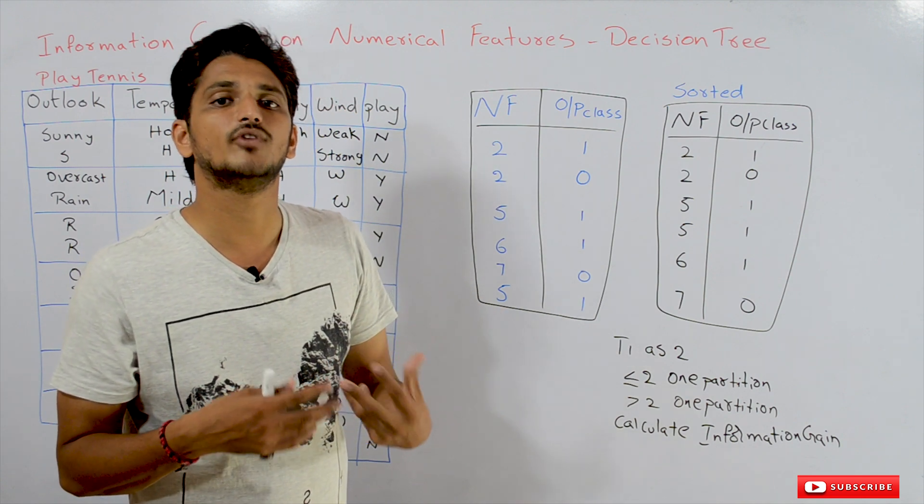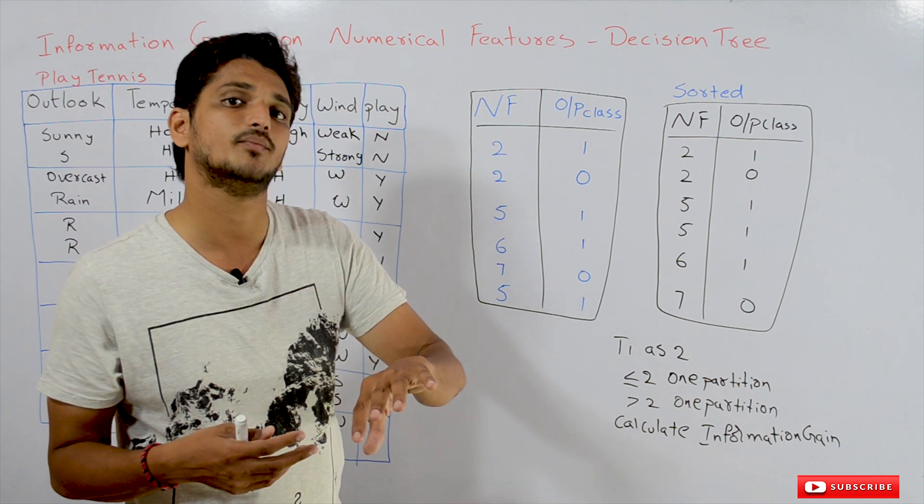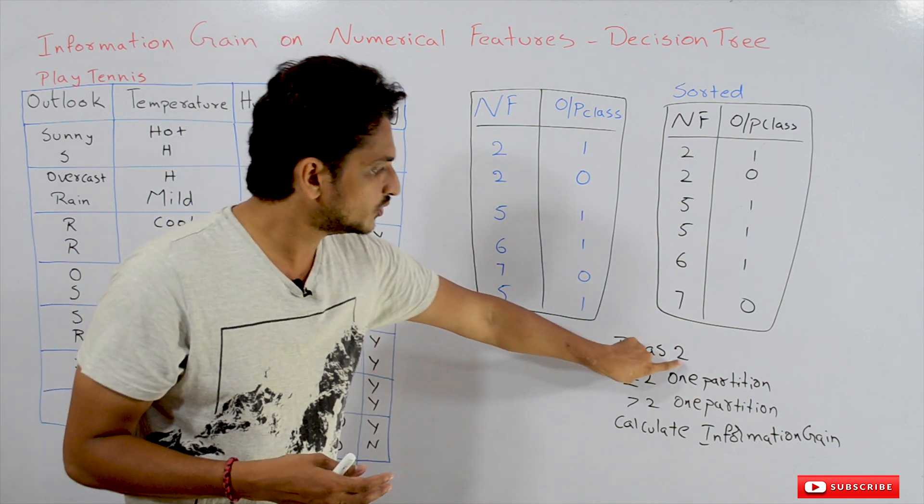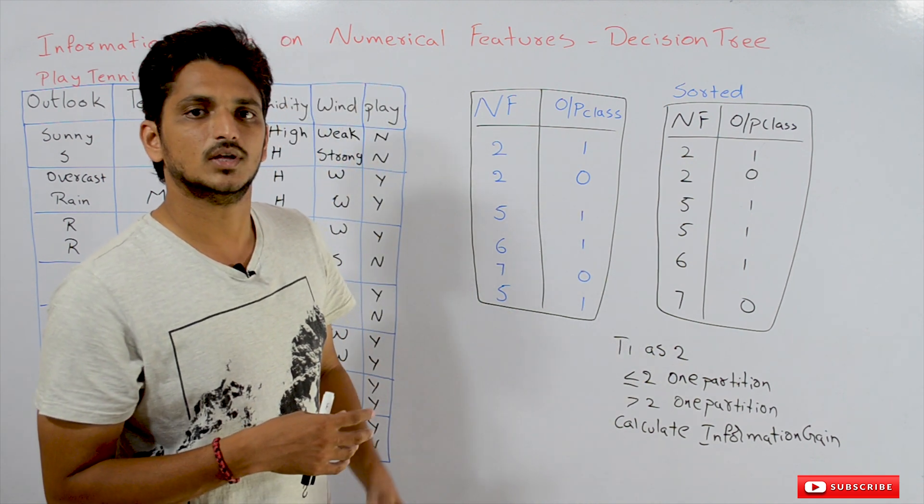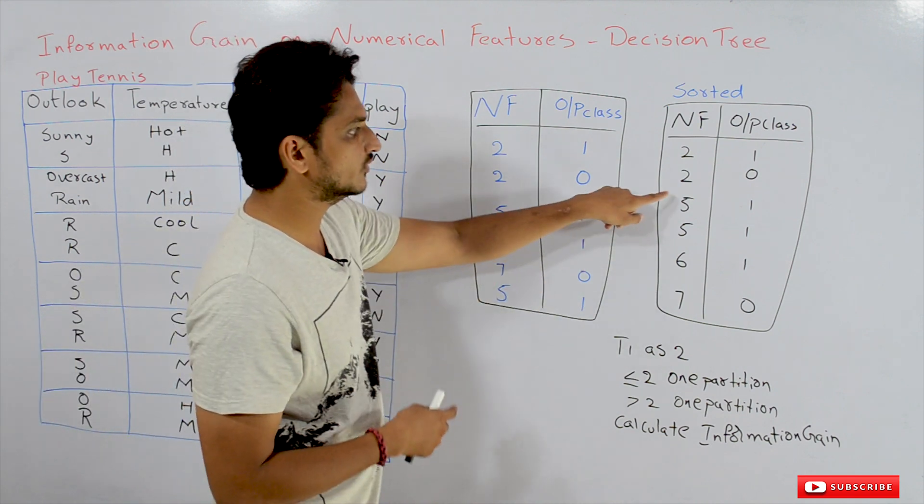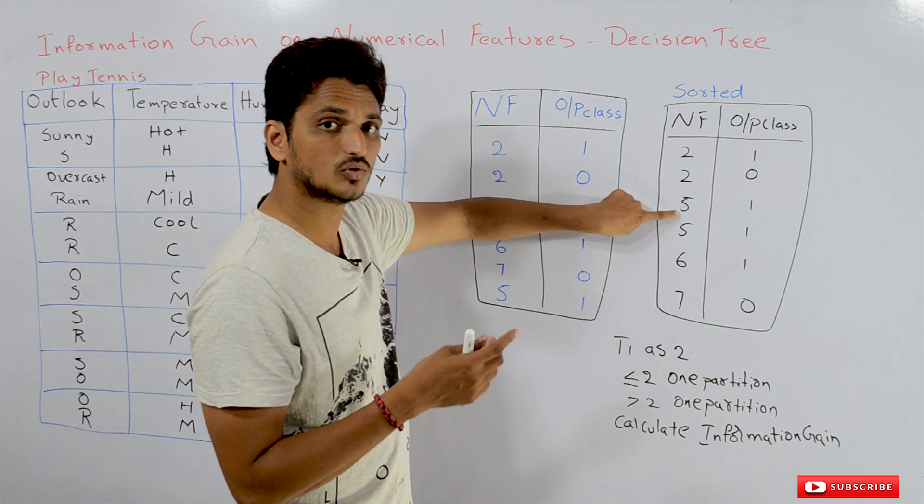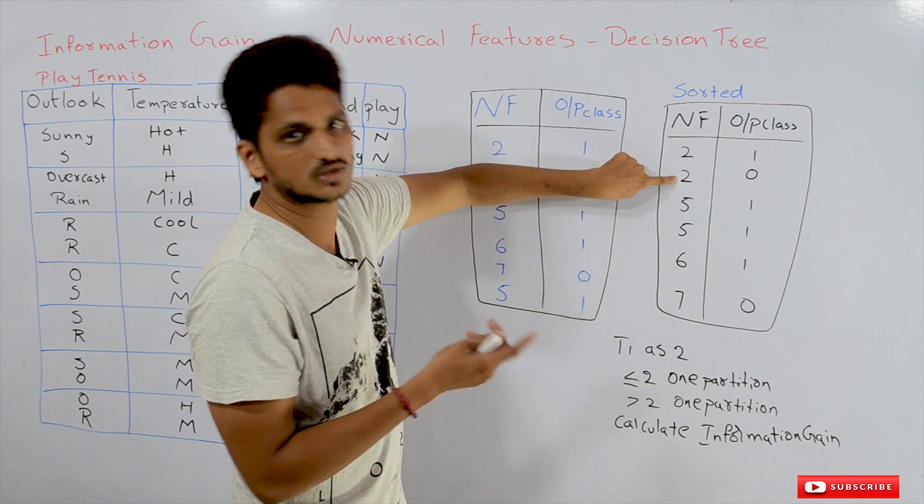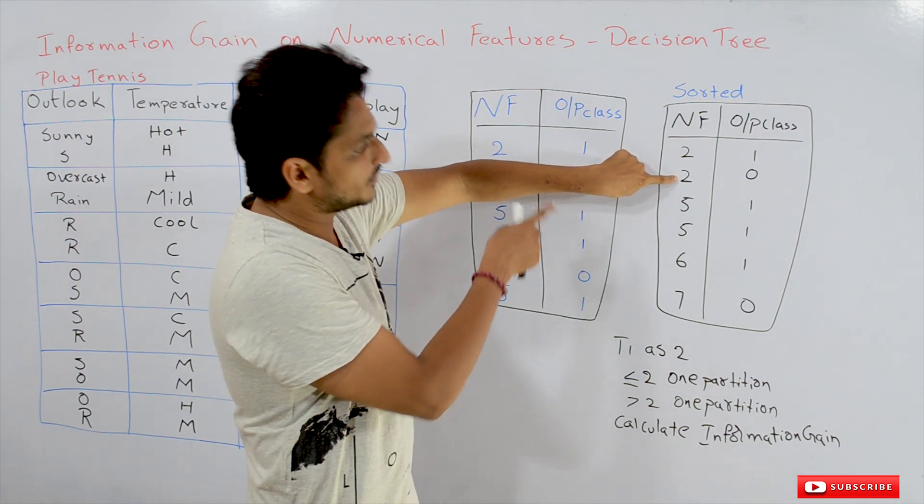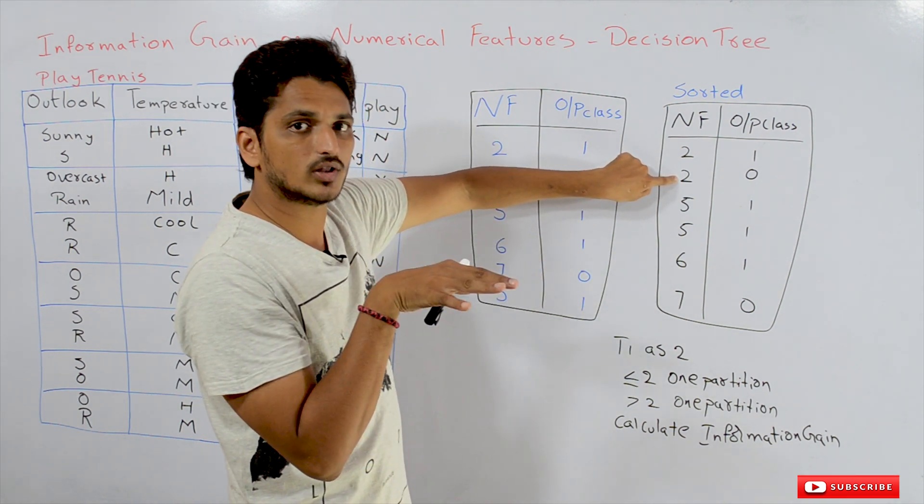Now, we know how to calculate information gain. So calculate information gain by taking 2 as the threshold value. Then do it on 5. What is the next distinct value? We should not repeat on 2 because it is already done. Repeated values we do not do. We do it on distinct values.